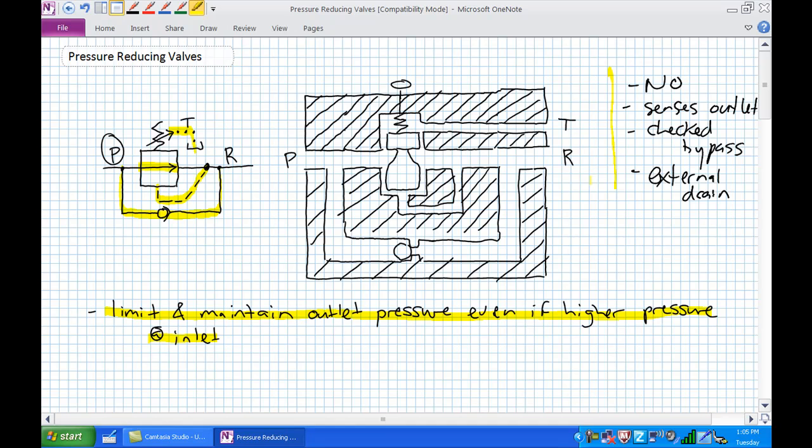Well, if it's sensing pressure at the outlet and it's normally open, and if pressure exceeds a certain value set on our biasing spring at the outlet, it sounds like it would close. So what it's doing is basically continually monitoring our outlet pressure. And if the pressure gets too high, it starts closing itself down, thereby limiting and maintaining our outlet pressure, even if there's higher pressure at the inlet.